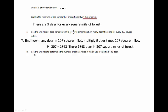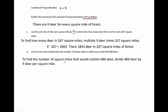Now we can use this unit rate to go backwards, too. In Part C, we knew there were 207 square miles, so we multiplied by 9. But in Part D, we don't know the number of square miles, but we do know the number of deer. So we're going to divide to find the number of square miles that would contain 486 deer. When we do that, we get 54 square miles. So 486 deer would be found in 54 square miles of forest.